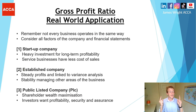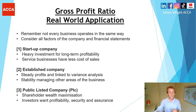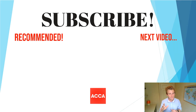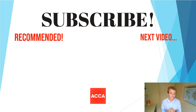Shareholder wealth maximization is key and will always link into the gross profit ratio — if you're a shareholder, you want profits up and the share price to go up, and to achieve that the gross profit has to go up. Investors want profitability, security, and assurance without compromising quality. Apply that real-world application to the example in your exam. That takes you through everything you need to know for the gross profit margin — be sure to subscribe, give the video a like, and leave any questions in the comments. See you next time!